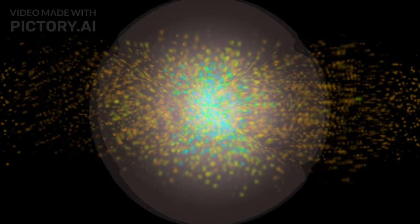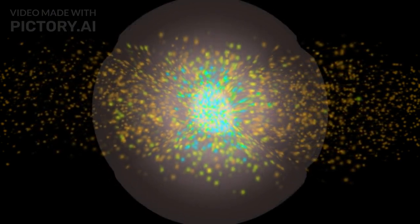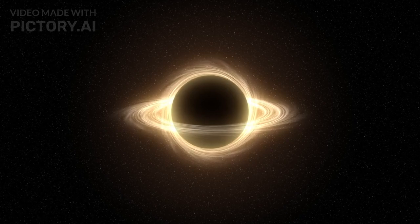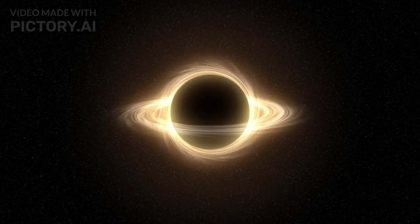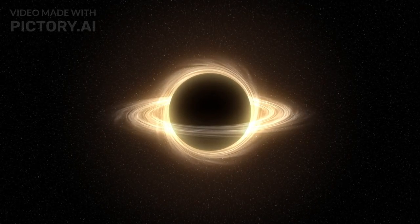Black holes come in various sizes. Stellar black holes, formed from collapsing stars, have a few times the mass of our sun. Supermassive black holes, found in galaxy centers, have millions or even billions of times the sun's mass.